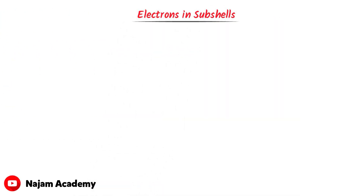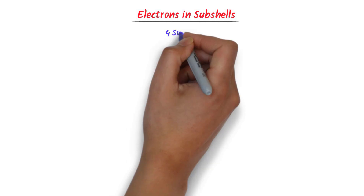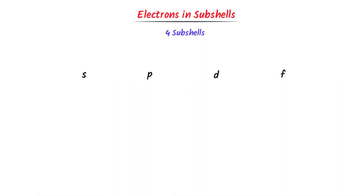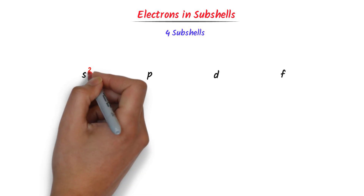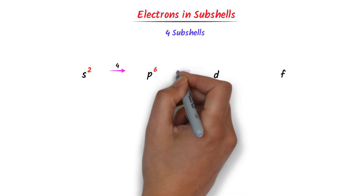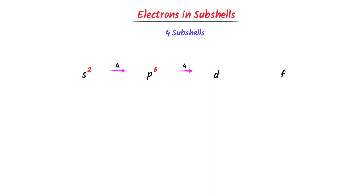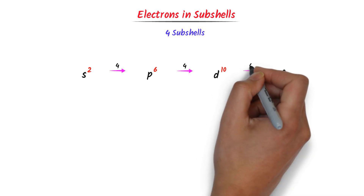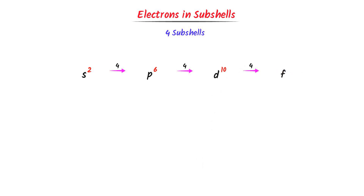Now let me teach you electrons in sub-shells. We know that there are four sub-shells — S, P, D, F — present inside any atom. S can accommodate 2 electrons, P can accommodate 6 electrons, D can accommodate 10 electrons, and F can accommodate 14 electrons. Remember these four sub-shells and the number of electrons they can accommodate.